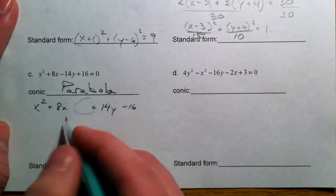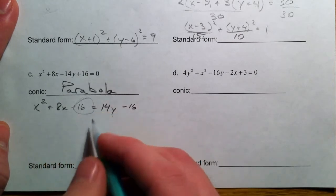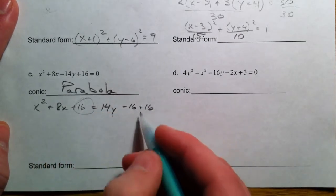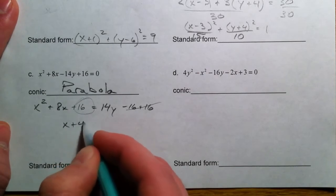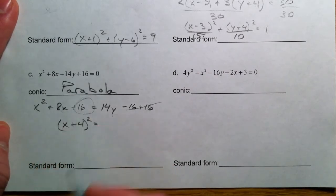So what goes there? Well, half of 8, 16. So we add 16. That crosses out. So we get x plus 4 squared. That was the whole purpose of taking half the middle term, squaring it.